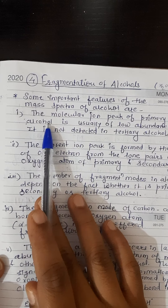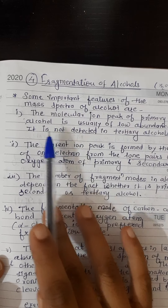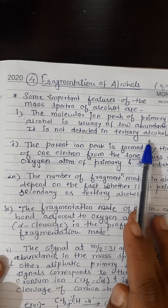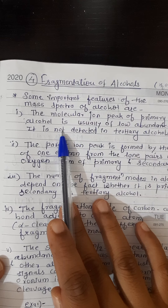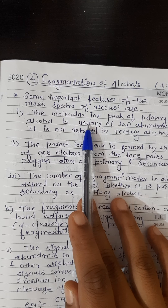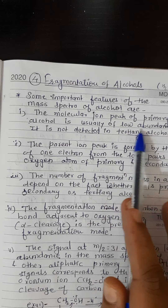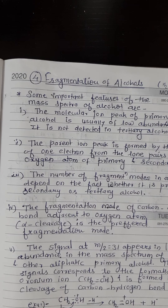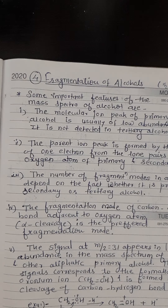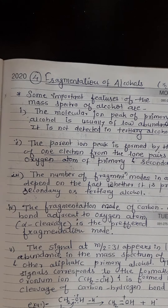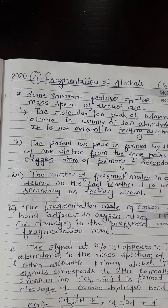No. 1: the molecular ion peak of primary and secondary alcohol is usually of low abundance — it is not detected in tertiary alcohol. This means the molecular ion peak, which we call the parent ion peak or relative abundance, is low for primary and secondary alcohols, but for tertiary alcohol this peak cannot be detected at all.